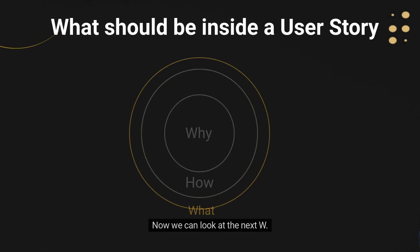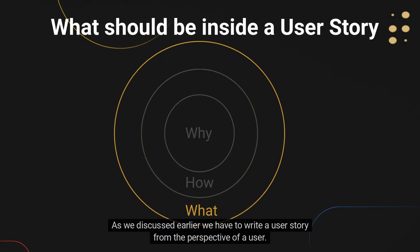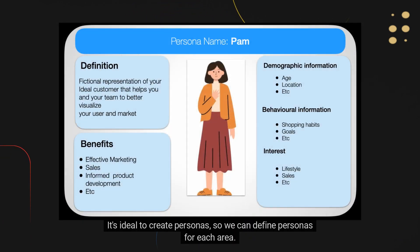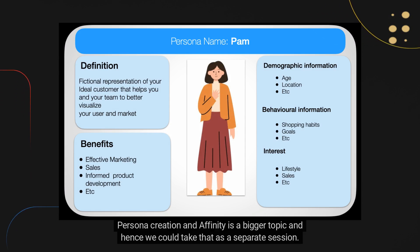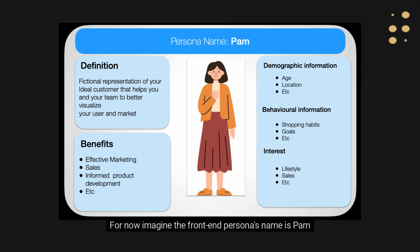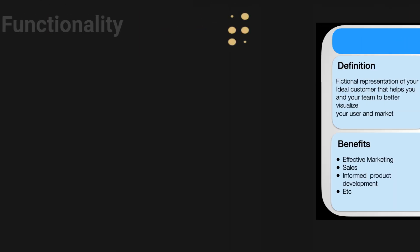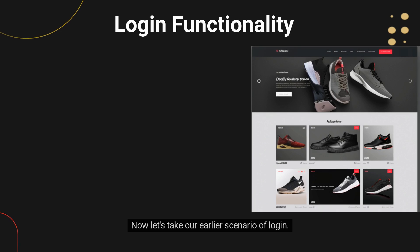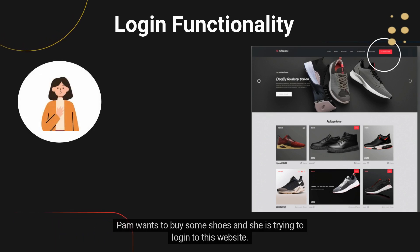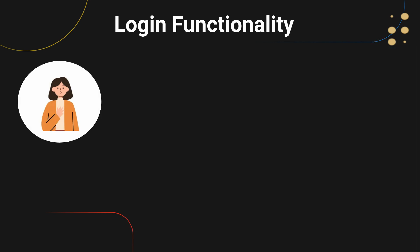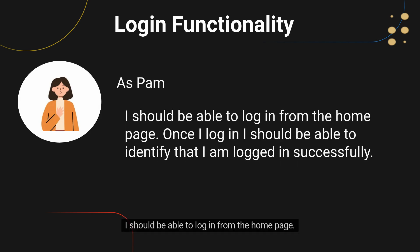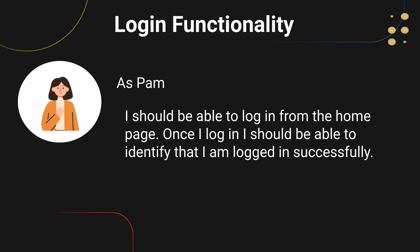Now we can look at the next W — the what. As we discussed earlier, we have to write a user story from the perspective of a user. It's ideal to create personas, so we can define personas for each area. For now, imagine the front-end persona's name is Pam. Let's take our earlier scenario of login. Pam wants to buy some shoes and she is trying to log into this website. If we put this in simple English, then your first user story is ready: as Pam, I should be able to log in from the homepage. Once I log in, I should be able to identify that I am logged in successfully.